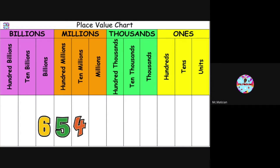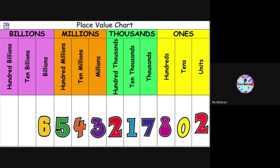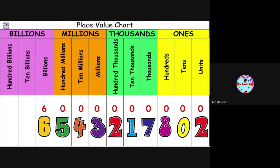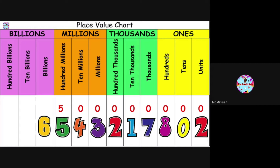Pause the video and read this number. Did you get 6,500,000,000? What's the value of the 6? Did you guess 6,000,000,000? What about the five? Five hundred millions. And what about the zero? That's correct — no tens, absolutely nothing.